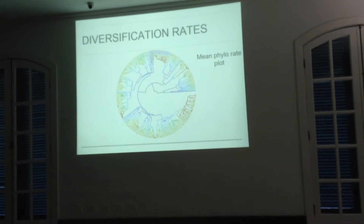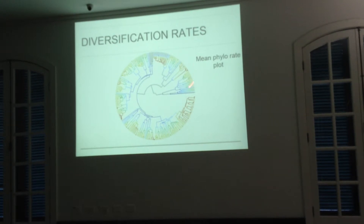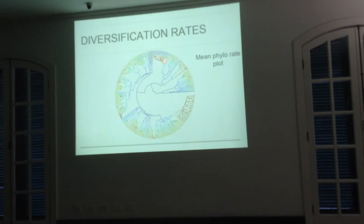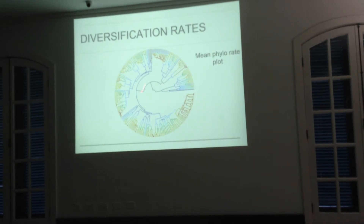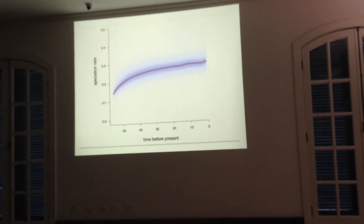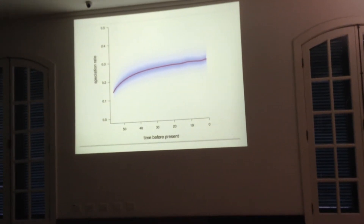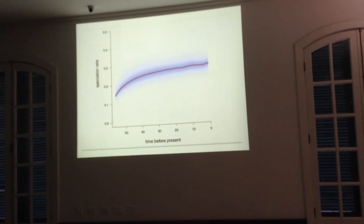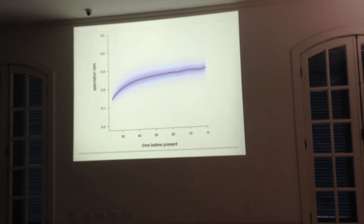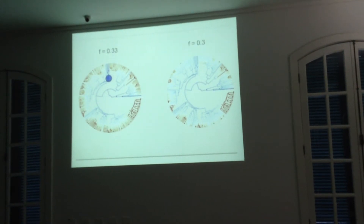For diversification rates, this shows the mean phylogenetic rate. We can see a few clades with increased diversification rates that later slow down, and a few clades that are slow throughout. The overall speciation rate is increasing through time, but not particularly fast. What is interesting is that this family achieved a lot of morphological variation with a relatively moderate speciation rate — something we are also exploring further.